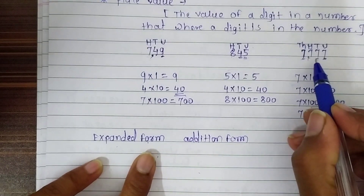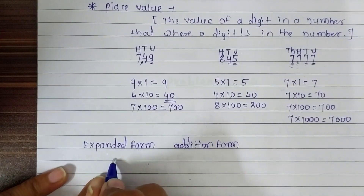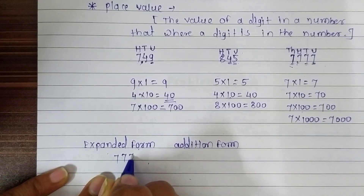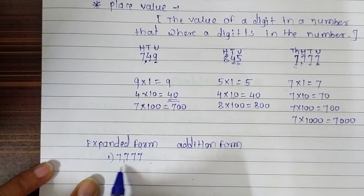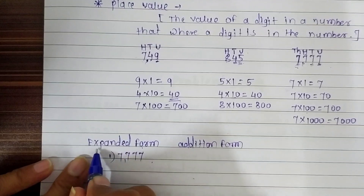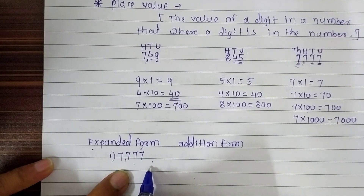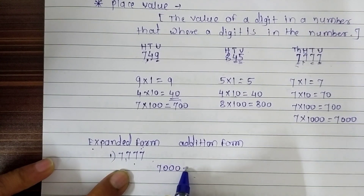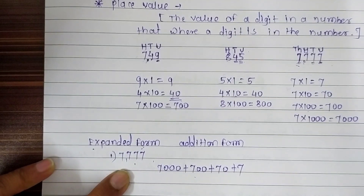For example, look at 7777. When we write this number in addition form with the place values, we get the expanded form. So it is written as: 7000 plus 700 plus 70 plus 7. It's easy.